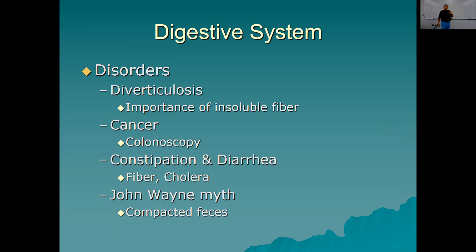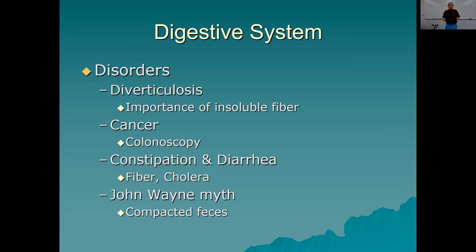Constipation and diarrhea: fiber — cellulose, plant material — helps fill the GI tract, stretch it, push things along, and keeps you regular. It's good to defecate every day, and fiber helps you do that. Cholera is caused by drinking dirty water; it's a bacterium that prevents the absorption of water from your large intestine and causes massive diarrhea. In developed countries it's treatable with antibiotics, but in third-world countries massive diarrhea kills countless children every year through dehydration, and unfortunately the same contaminated water that causes cholera is often what's available.